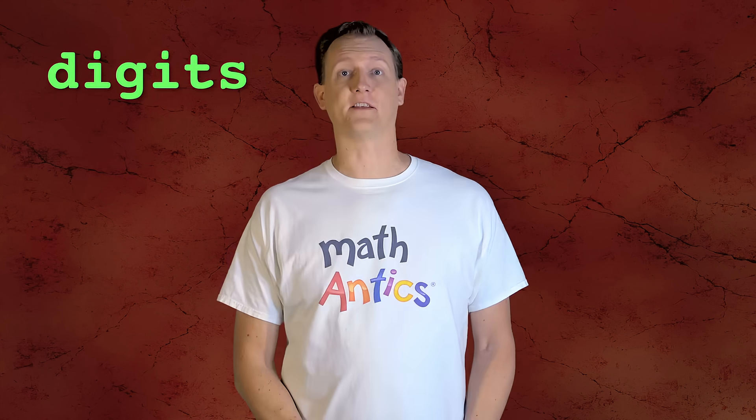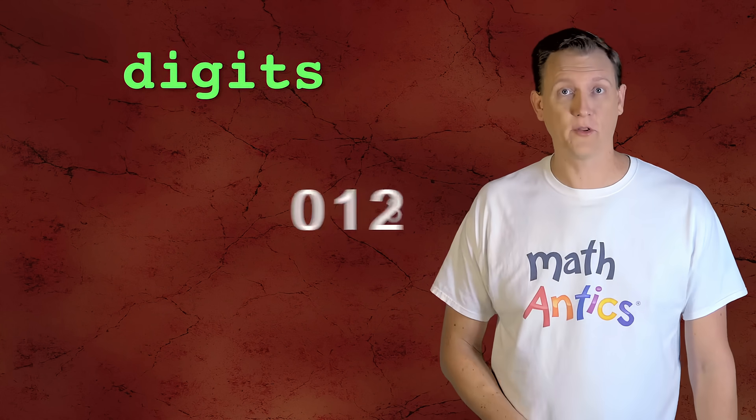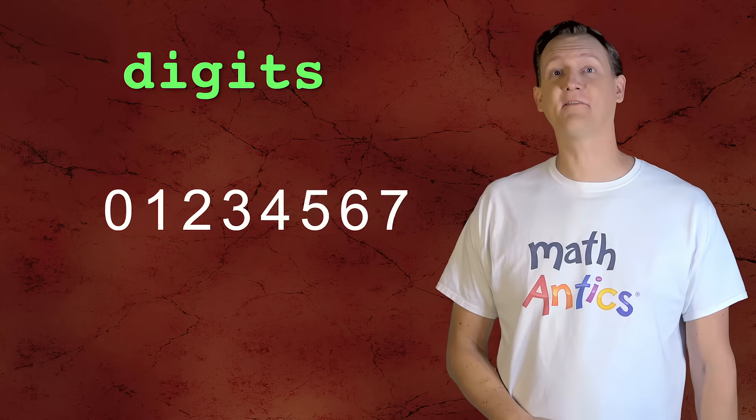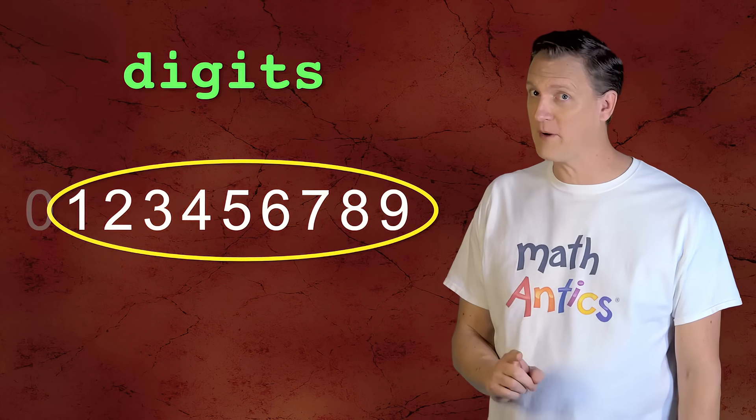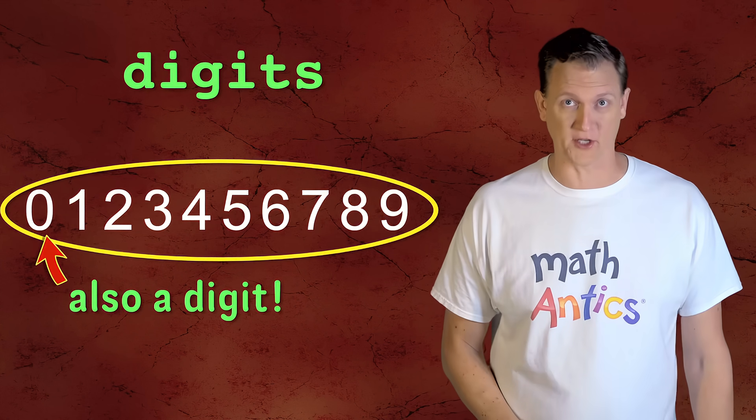The 10 symbols that we use are called digits and they look like this: 0, 1, 2, 3, 4, 5, 6, 7, 8 and 9. At first glance, you might think that that's only 9 digits, but remember, the 0 counts as one of the digits also.